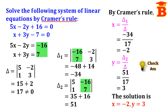We can check the answer. Taking the second equation: x value is minus 2, y value is 3, so 3 into 3 is 9. We get minus 2 plus 9 equals 7, and the right hand side is 7. So 7 equals 7, the equation is satisfied, therefore the answer is correct.